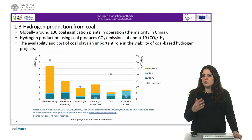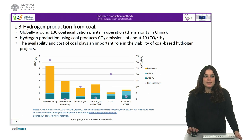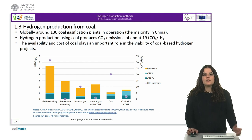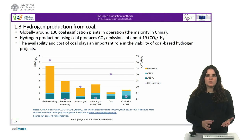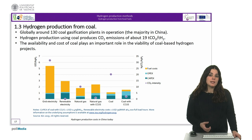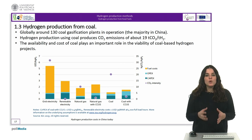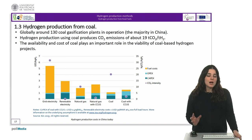Hydrogen production from coal using gasification is a well-established technology. Globally, there are around 130 coal gasification plants in operation, more than 80% of which are in China. Hydrogen production using coal produces CO2 emissions of about 19 tons of CO2 per ton of hydrogen, which is twice as much as natural gas. The high CO2 emission intensity of coal-based hydrogen means that carbon capture technology will need to be used if hydrogen from coal is to have a future in a low-carbon energy system.